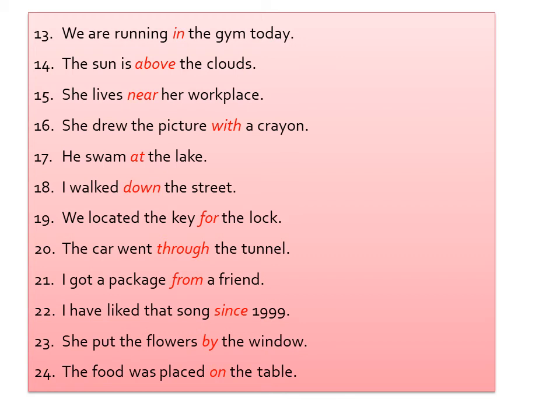Very simple — two parts of sentences are joined. 'We are running' — running is a verb, and after the verb the preposition 'in' comes. 'The sun is above' — sun is a noun, and 'above' is the preposition. 'She lives near her workplace' — 'lives' is a verb and 'near' is the preposition. In simple words, a preposition is a connecting word — it connects noun, verb, and adjective in a sentence.